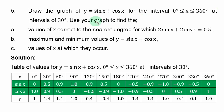Draw the graph of y equal to sin s plus cos s for the interval 0 degrees less than equal to s less than equal to 360 degrees at intervals of 30 degrees. What this means is that in the table of values, the difference between any two points should be 30 degrees.